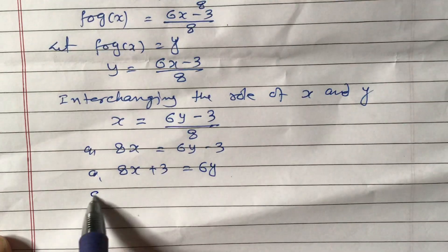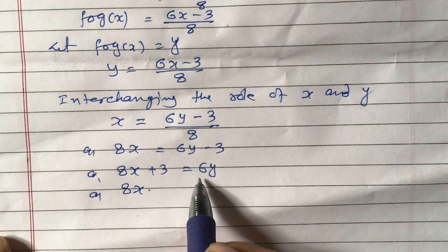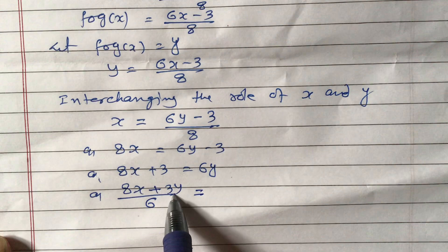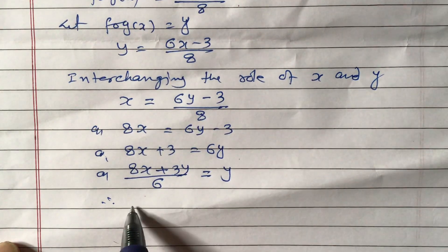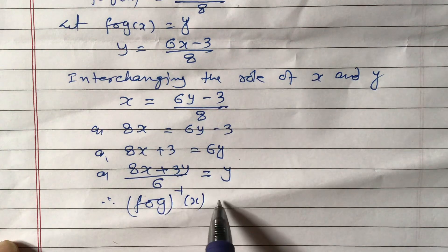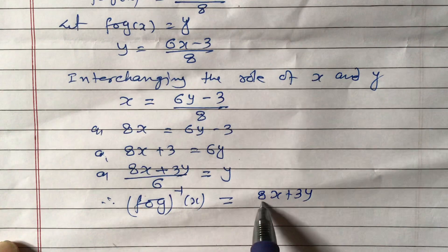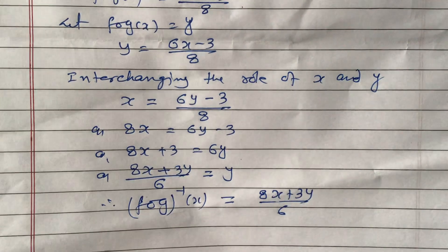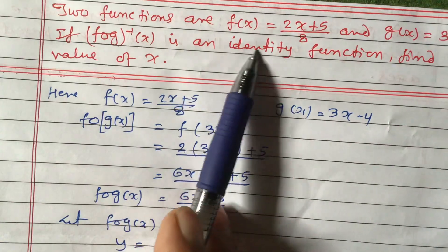So y equals (8x + 3) / 6. Therefore, f of g inverse x equals (8x + 3) / 6. In the question it is given that f of g inverse x is an identity function.